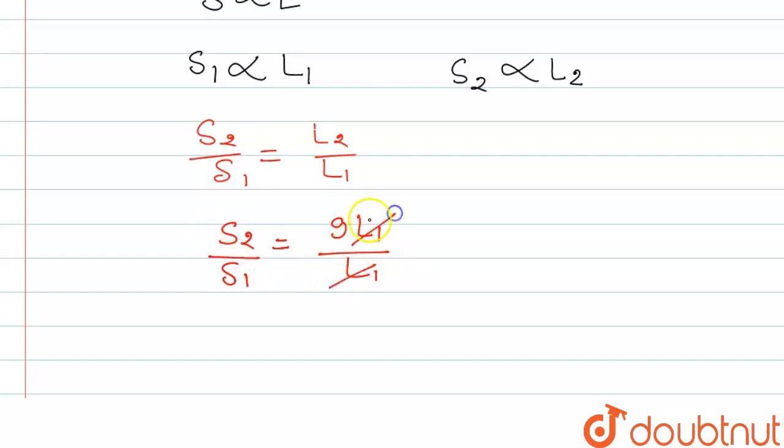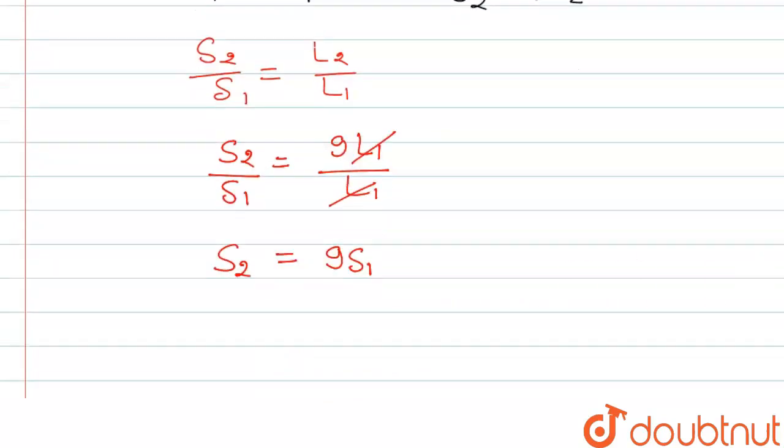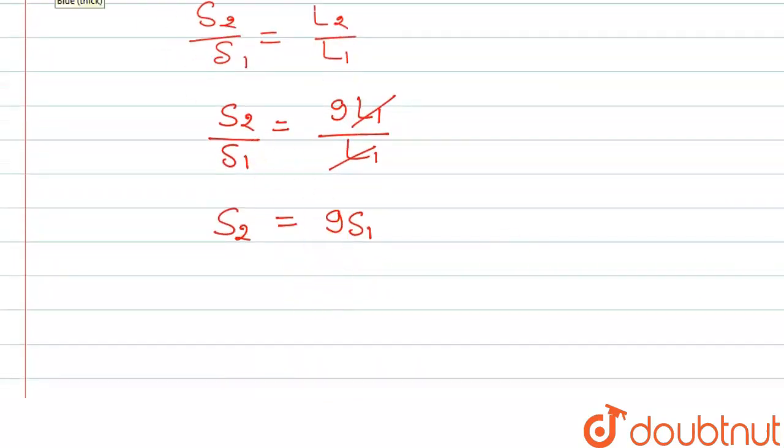So here L1 and L1 both will be cancelled out. So the stress, that is S2, is increasing by factor 9 of initial. So here we have the factor 9.